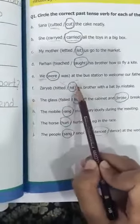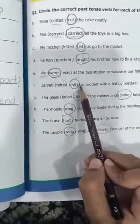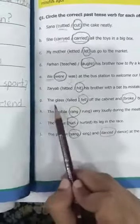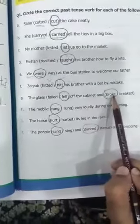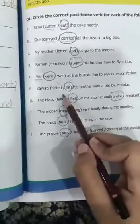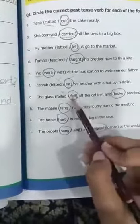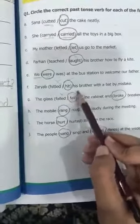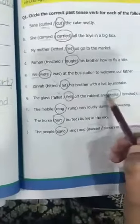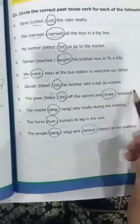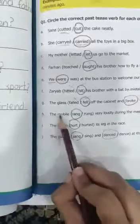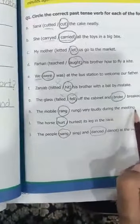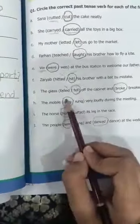Option G: 'The glass falled/forded/fell off the cabinet and broked/broke.' 'Forded' is not any word, the second form of 'fall' is 'fell,' so you will circle 'fell.' The second form of 'break' is not 'braked,' it is 'broke,' so you will circle 'broke.' Option H: 'The mobile rang/rung very loudly during the meeting.' 'Rang' is the correct word.